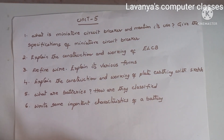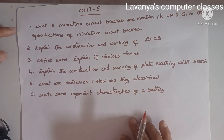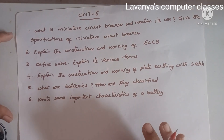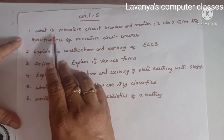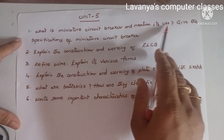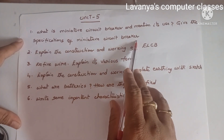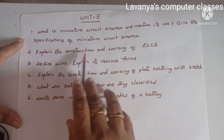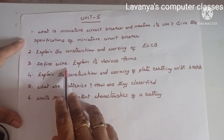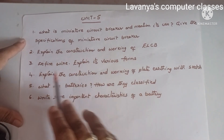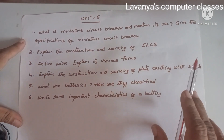Unit 5 important questions: what is a miniature circuit breaker (MCB)? Mention its uses and give its specifications. Second: explain the construction and working of ELCB. Third: explain its various forms. Next: explain the construction and working of plate earthing with a neat sketch/diagram.